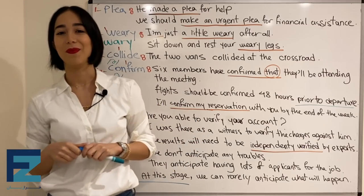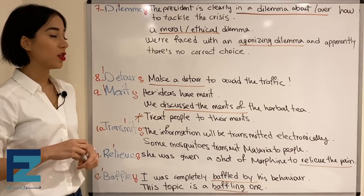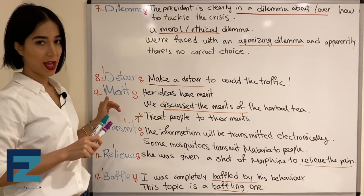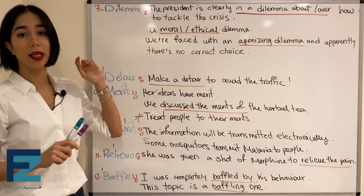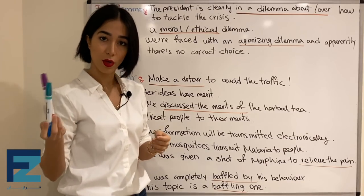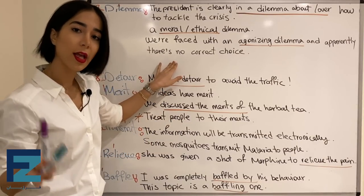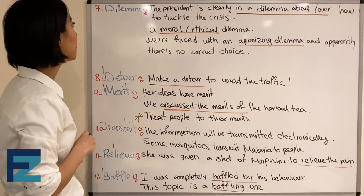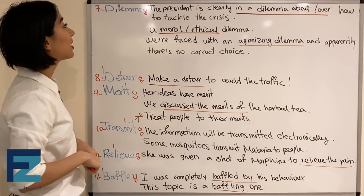خب این از شش‌تا لغت اول. بریم سراغ تخته دوم. به شدت پرکاربرد هستن همه این لغت‌ها، به خصوص لغت اولش که می‌خوام کلی نکته بهتون بگم. دفترهاتون رو آماده بکنید — چیزایی که می‌نویسم رو حتماً بنویسید چون به شدت به درد writing و speaking تون می‌خوره. The seventh word is dilemma.